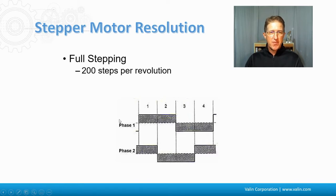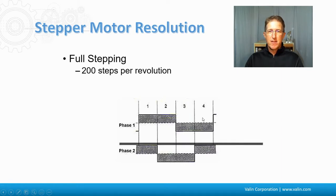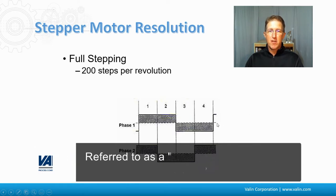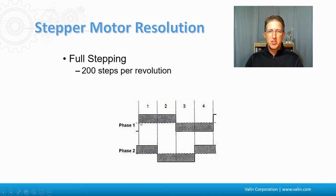If you have two phases and you turn on both phases, you're at one step. If you turn off one phase but leave the other on, that's a second step. Now you turn off the first phase, so both phases are off — that's a third step. Then you turn this one back on — that's a fourth. The next step is this phase on. So that's four steps just to go through that first little electrical cycle. That's full stepping.